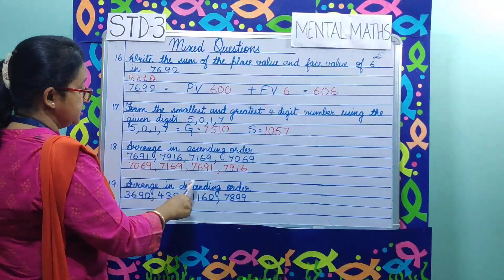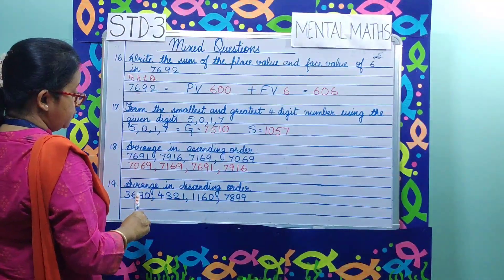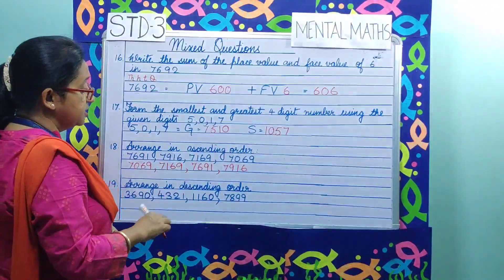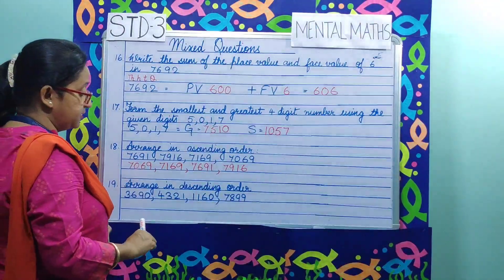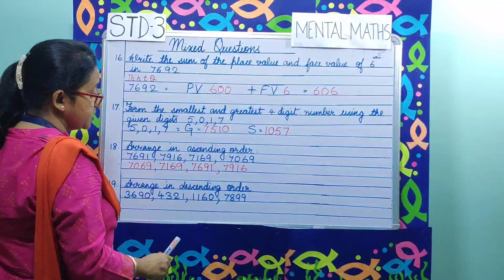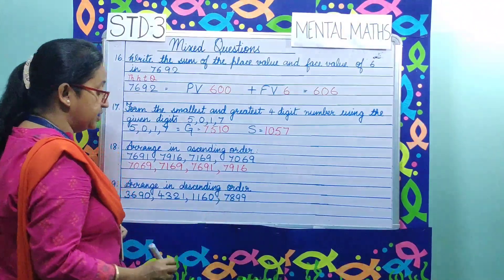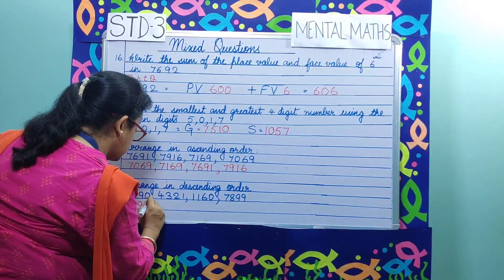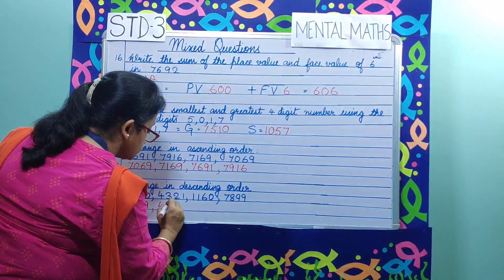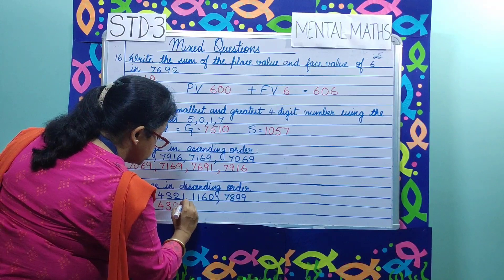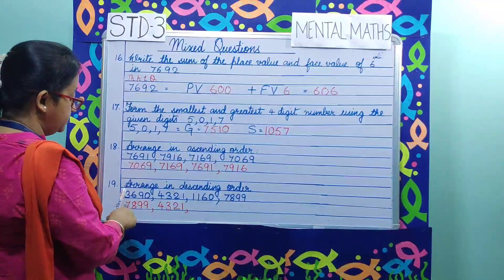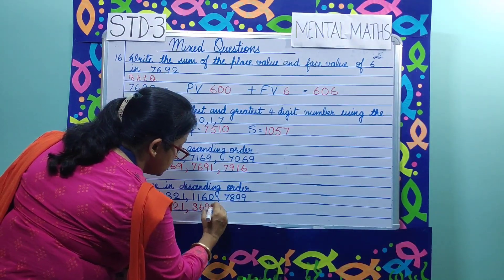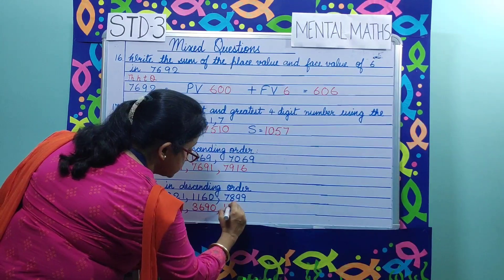Question number 19. Arrange in descending order. Descending order means arranging numbers from the bigger number to the smaller number. The biggest number is 7,899, then 4,321, then 3,690, and the last number is 1,160.